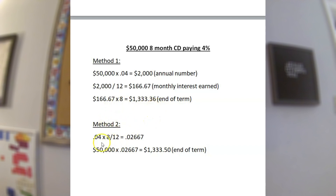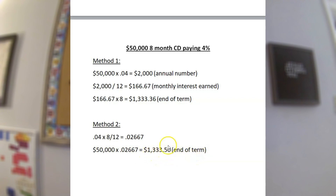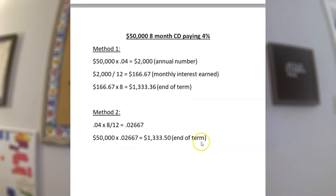Using method two: take your APY multiplied by 8 divided by 12, which equals 0.02667. Multiply that by your deposit of $50,000, which equals $1,333.50. These two numbers are off by only a few pennies, but either way gives you pretty close to what your interest earned will be at the end of the CD.